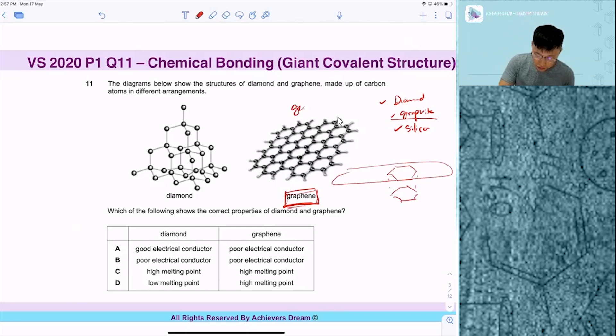Which of the following shows the correct properties of diamond and graphene? Definitely high melting and boiling point - D is out. It is a poor conductor of electricity because diamond cannot conduct electricity. The answer is left with B and C.